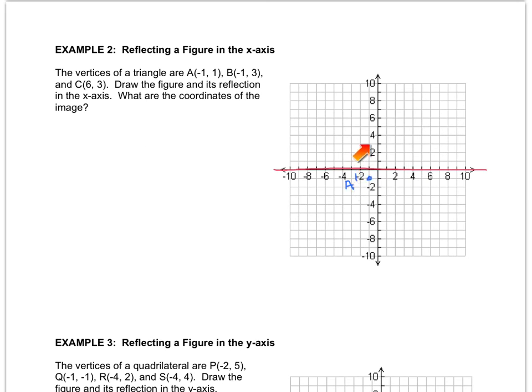So B prime is going to be three spots below the line. And so you can do this technique as well. It's not going to be so helpful in more advanced lines, but for the original x and y-axis reflections, it'll be fine. And then point C is three spaces above, so its image is going to be three spaces below.